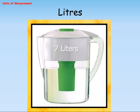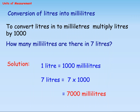Liters: Conversion of liters into milliliters. To convert liters into milliliters, multiply liters by 1,000. How many milliliters are there in 7 liters? Solution: 1 liter equals 1,000 milliliters, so 7 liters equals 7 into 1,000 equals 7,000 milliliters.